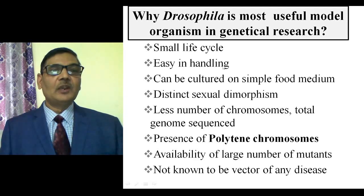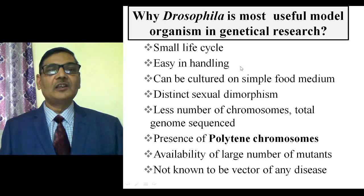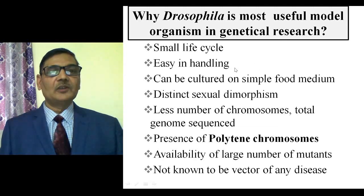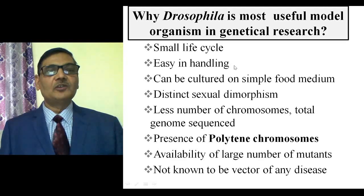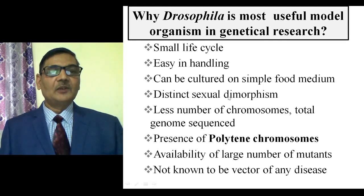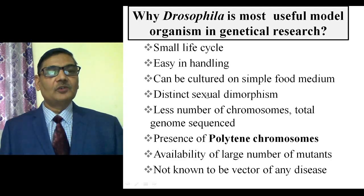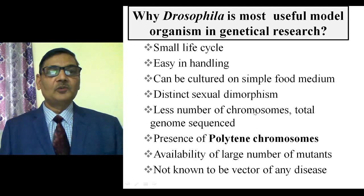These flies are quite easy to handle. You can etherize them or make them senseless using carbon dioxide or ether, and then easily manipulate or identify them for experiments. These flies can be cultured on a simple food medium. Males and females can be distinctly observed among a group of flies, so there exists distinct sexual dimorphism. These flies also have a small number of chromosomes — only four pairs.